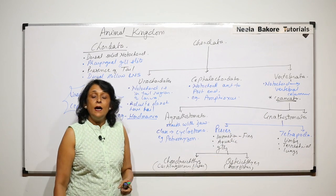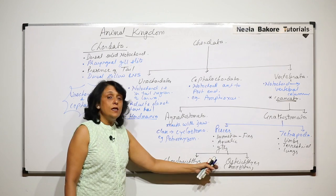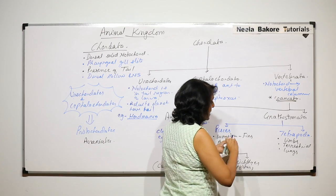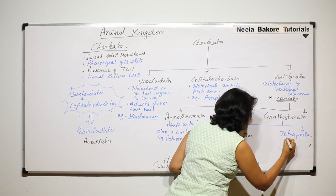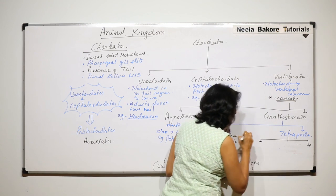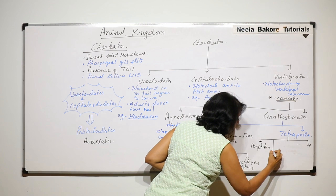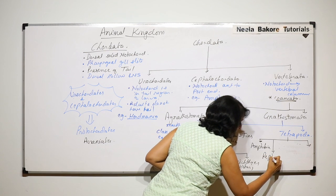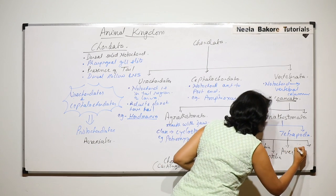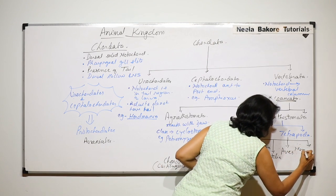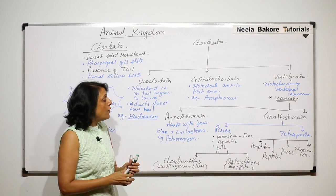This Tetrapoda is further divided into four classes. Pisces has these two and Tetrapoda has four. These four classes of Tetrapoda are: Amphibia, then Reptilia, third is Aves (that is birds), and fourth is Mammalia.